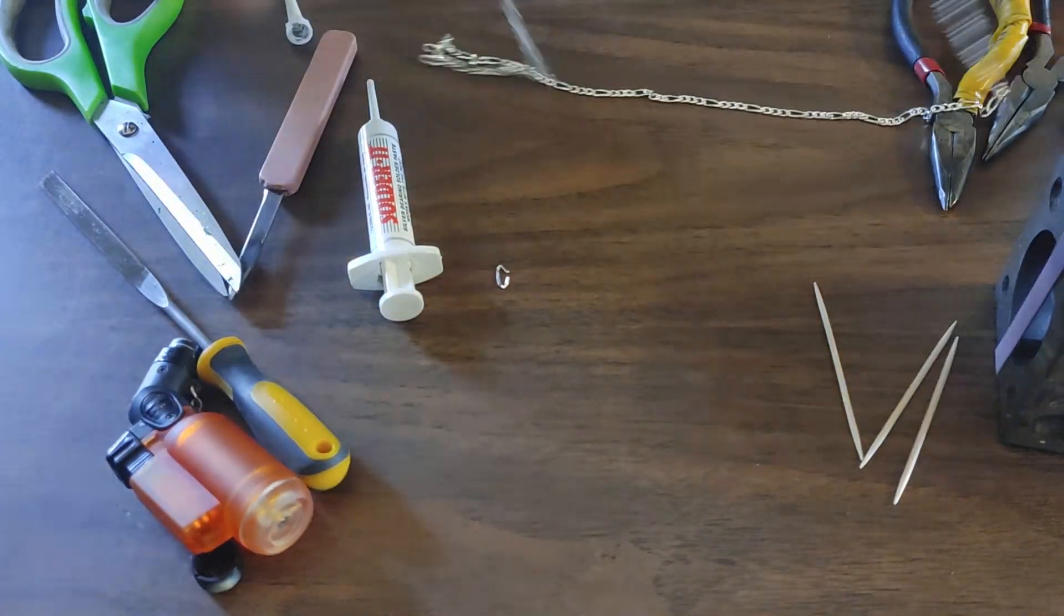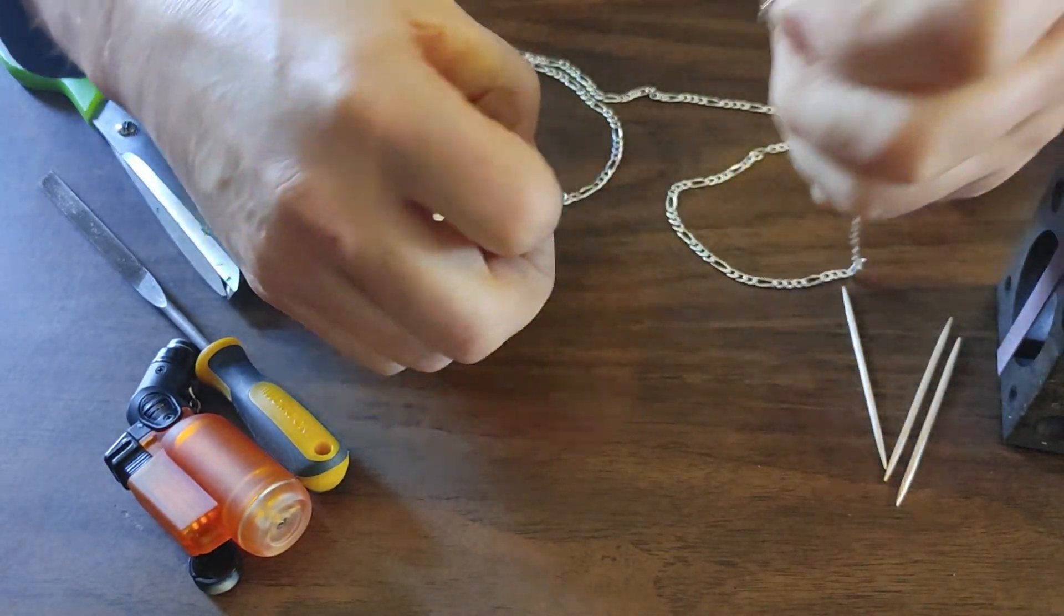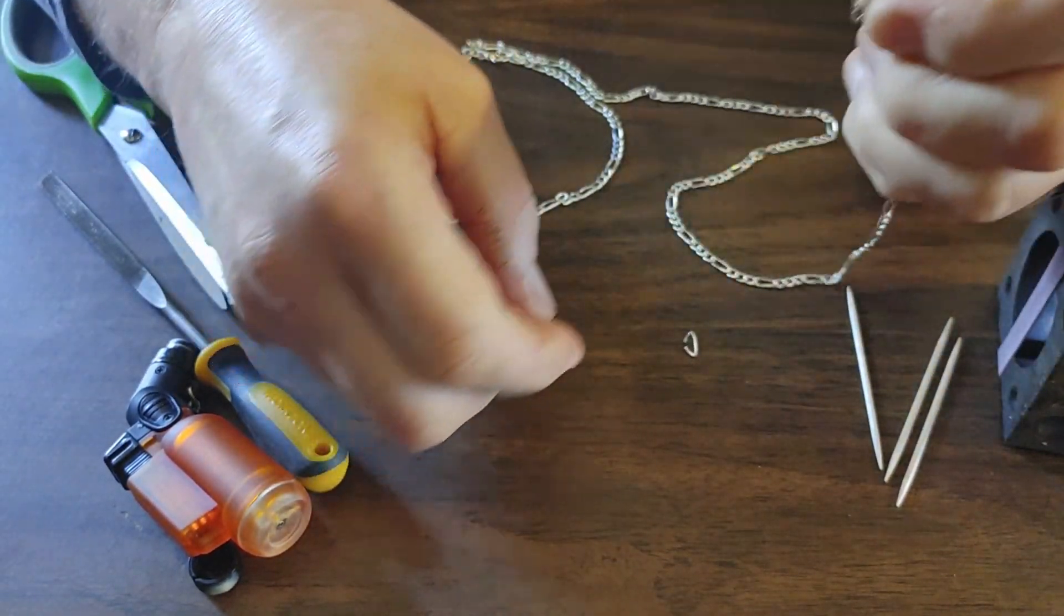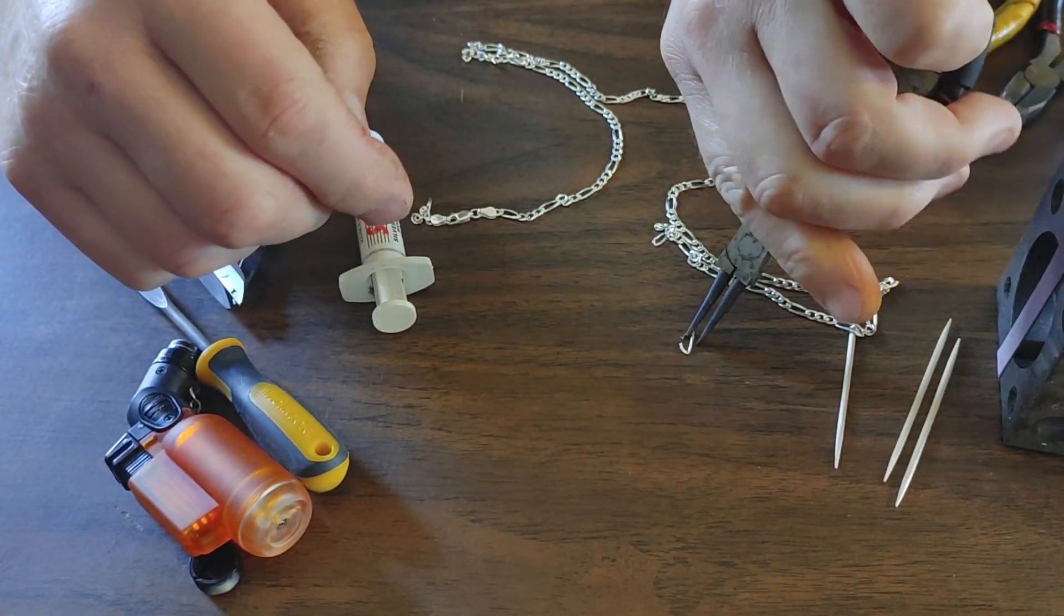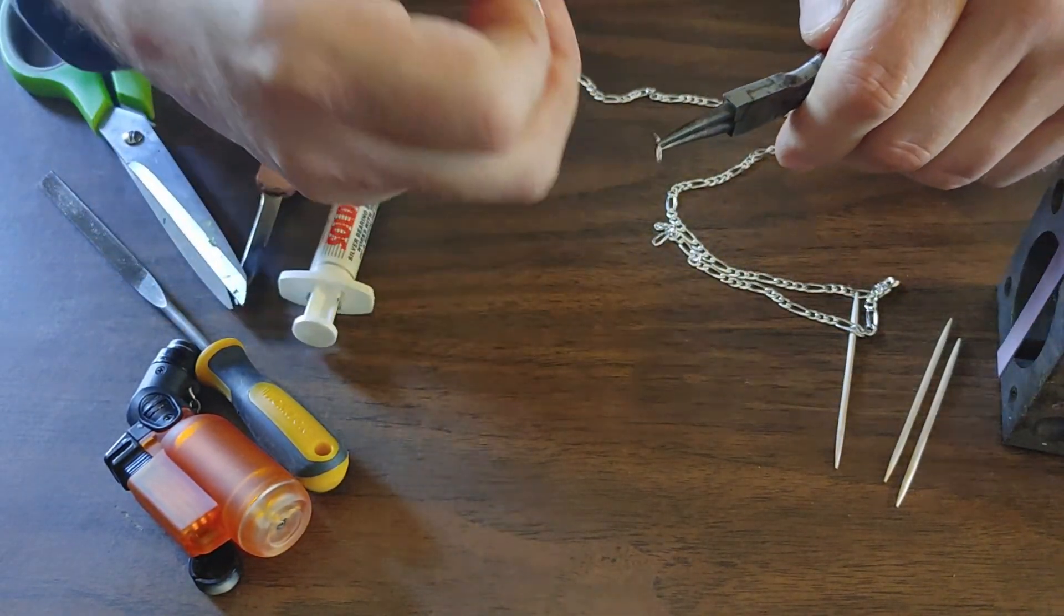As you can see, we have a broken Figaro chain here, but this repair will work with any kind of chain. If your chain has a link pattern, make sure to keep the pattern by removing excess links as needed.